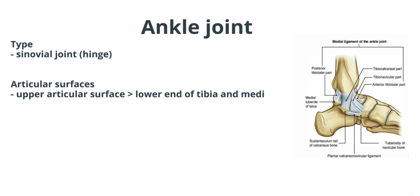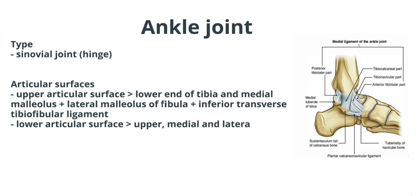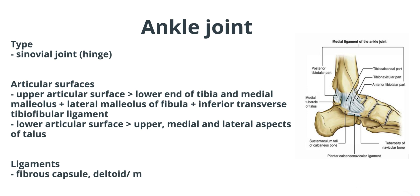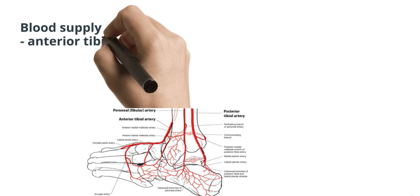The ankle joint is a hinge synovial joint. The upper articular surface is formed by the lower end of the tibia, the medial malleolus, the lateral malleolus of the fibula, and the inferior transverse tibiofibular ligament. The lower articular surface is formed by the upper, medial, and lateral aspects of the talus. The ligaments supporting this joint are the fibrous capsule, the deltoid or medial ligament, and the lateral ligament.